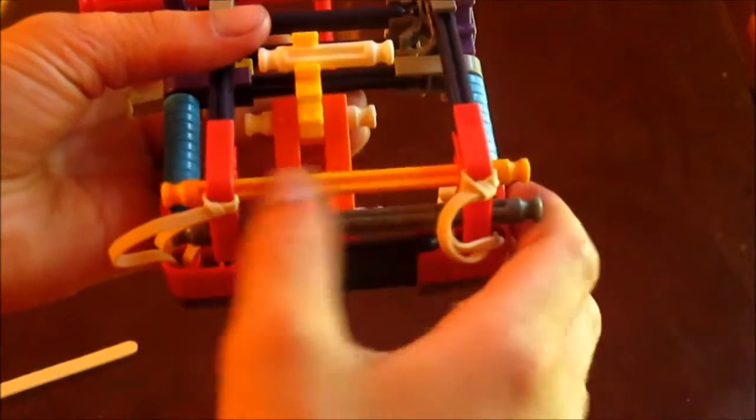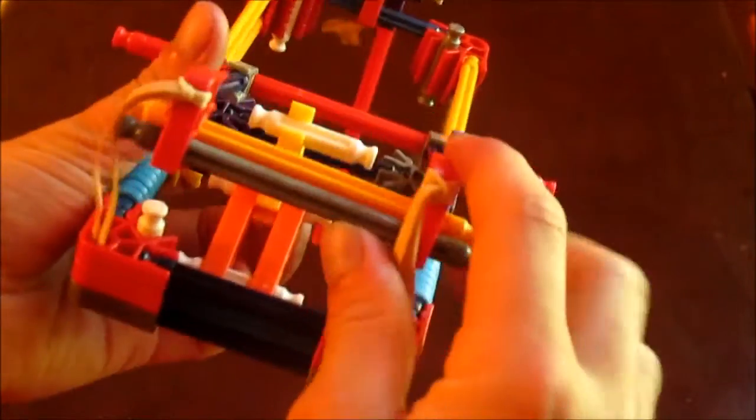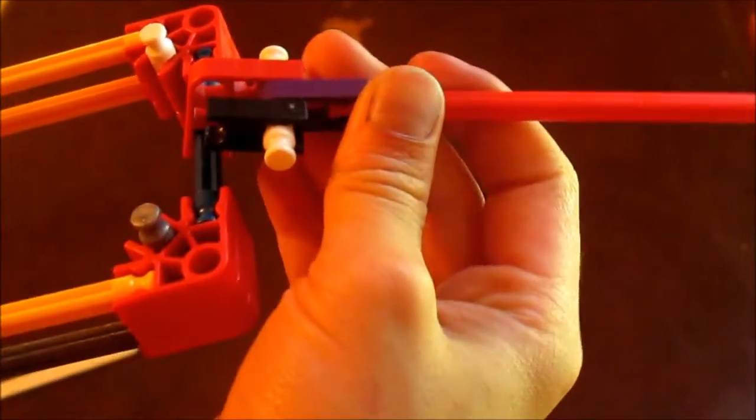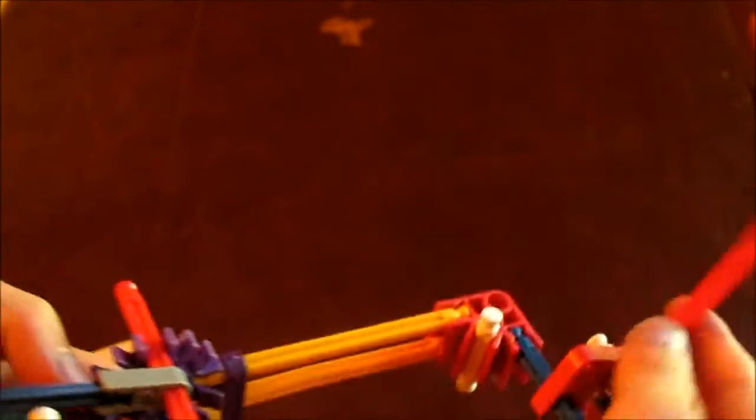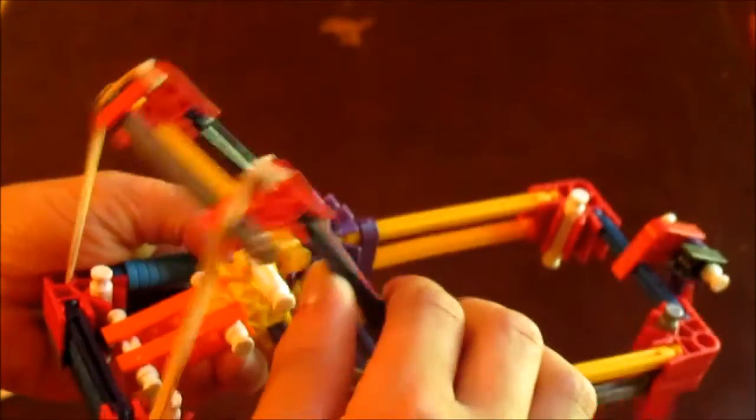It has two pieces right here. Comment down below what these pieces are called right here - this piece and this piece. Please comment down below what these are called because I have no idea. I think they're called like arms and like the catch spring or something like that. I don't know.